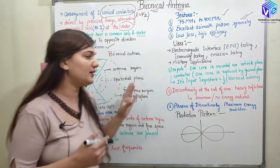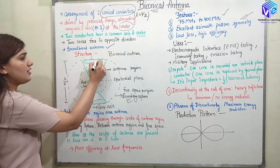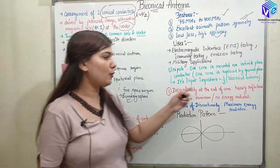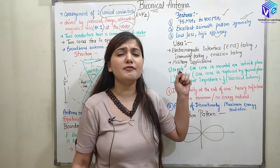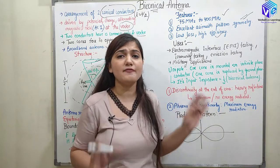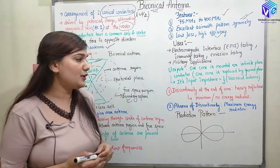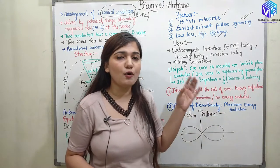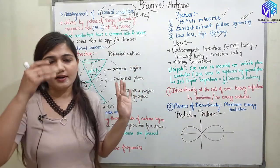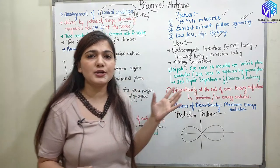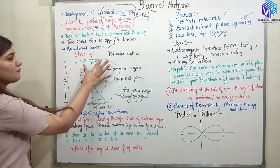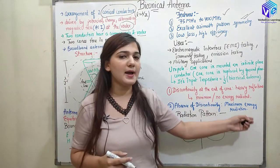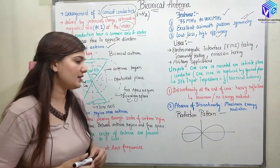If there is discontinuity at the end of the cones, heavy reflections will occur and minimum or no energy will be radiated. If there is an absence of discontinuity — meaning the structure is fully continuous — then in that case we will have maximum radiation of energy.